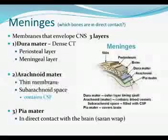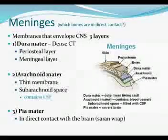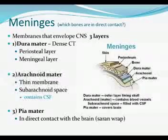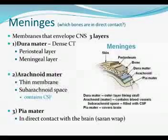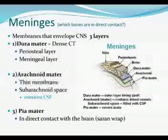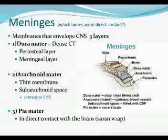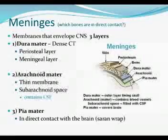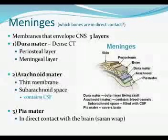CSF is cerebrospinal fluid, which we'll talk about in the next couple of slides. The deepest layer is the pia mater, which directly covers the brain — basically acting like saran wrap, shrink-wrapped tightly around the brain. It's another one you can actually see on the sheep brain; when you're making cuts, you can feel this thin film over it, and that's the pia mater.